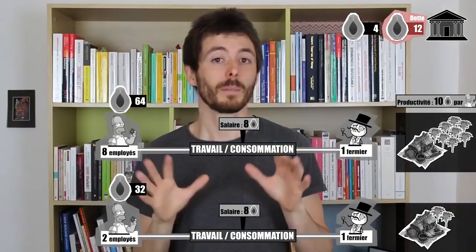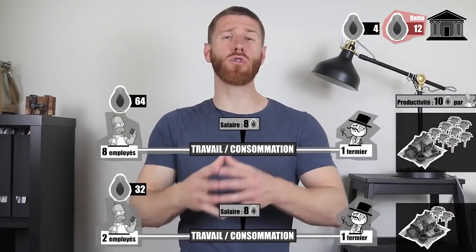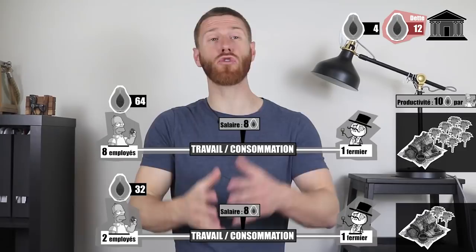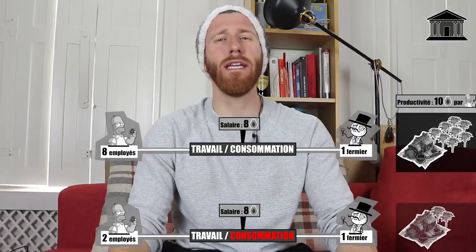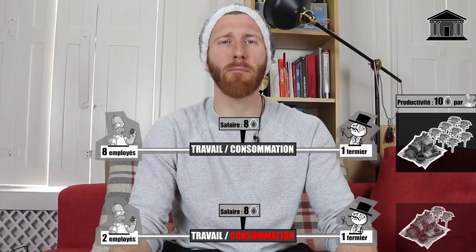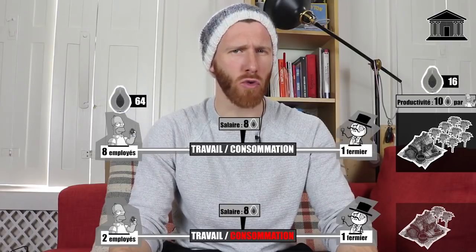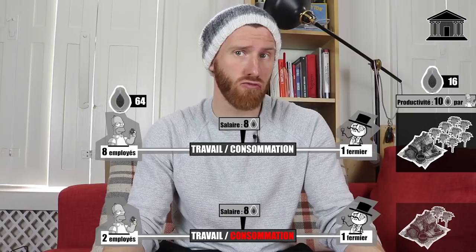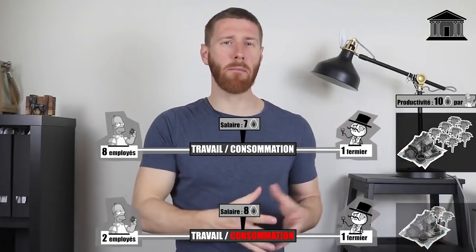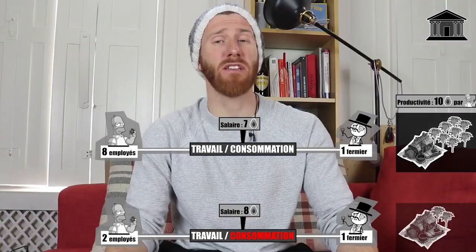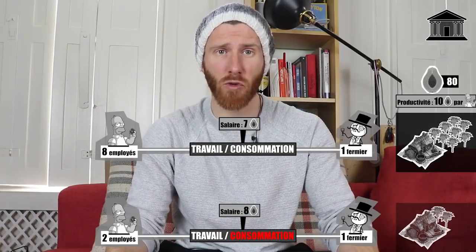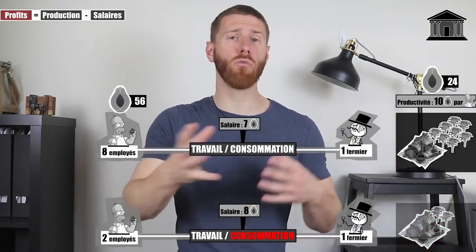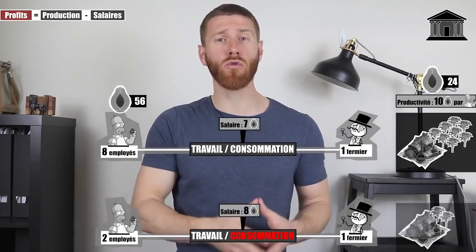That seems to work! Can we draw some conclusions from this model? What can we say about the relationship between wages and profits? Profits correspond to production minus wages. In the first farm: 80 papayas produced, 64 in wages, so profit equals the difference — 16. If wages were 7 papayas instead of 8: 7 × 8 = 56 papayas paid, so 80 − 56 = 24 papayas of profit. First conclusion: profit = production minus wages. If you lower wages without changing production, you increase profits.